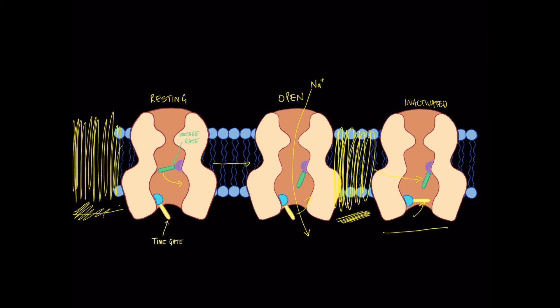Understanding the action of these sodium channels is really important for a couple of reasons. First, it helps us understand how the actions at the neuromuscular junction — involving acetylcholine receptors and everything we've already discussed — get propagated down the rest of the muscle membrane, since under normal conditions these acetylcholine receptors are not present outside the neuromuscular junction. These sodium channels are that other mechanism. Second, this foreshadows a conversation we'll be having in the future about depolarizing muscle relaxants, how they have their effect, and how they lead to paralysis.